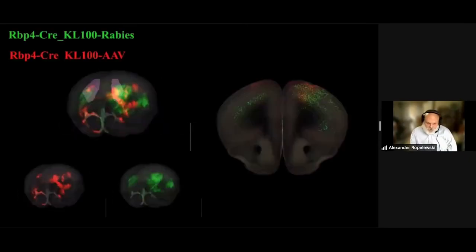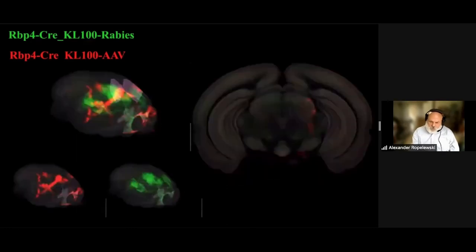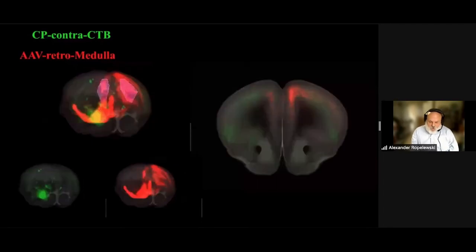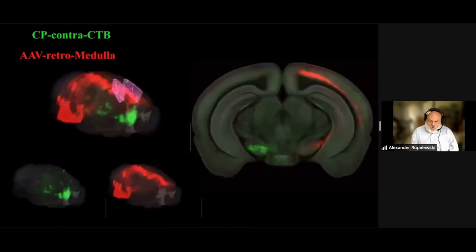This final video shows the common coordinate framework-based analysis of anterograde and retrograde tracing of the mouse primary motor cortex upper limb area projections. The first part of the video shows registered anterograde labeling in red and retrograde in green for layer 5 neurons derived by injection of AAVs to the upper limb area for anterograde labeling and rabies to target the retrograde labeling.